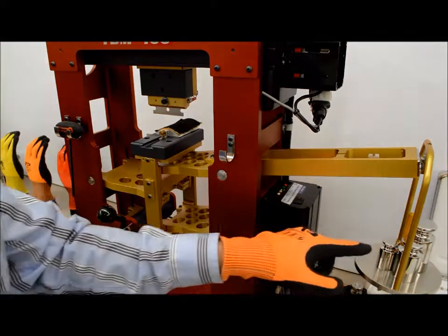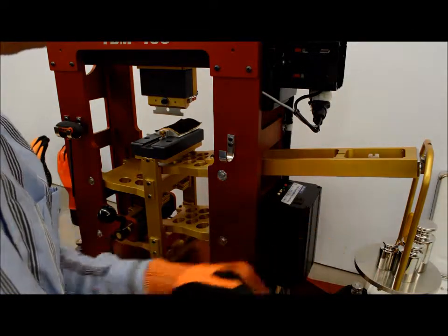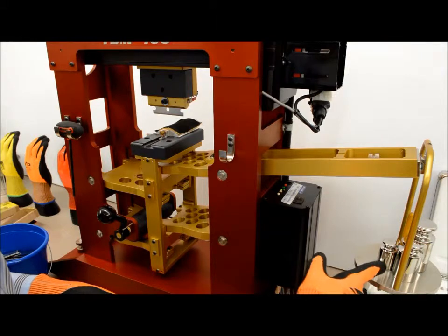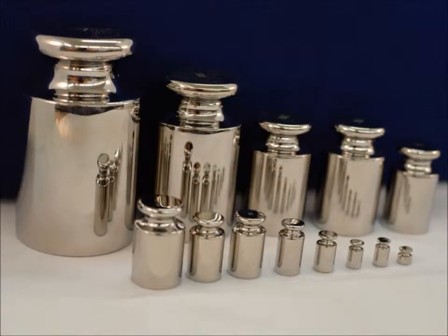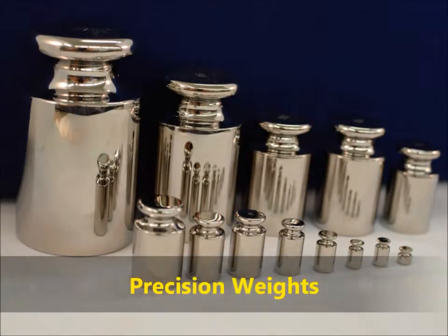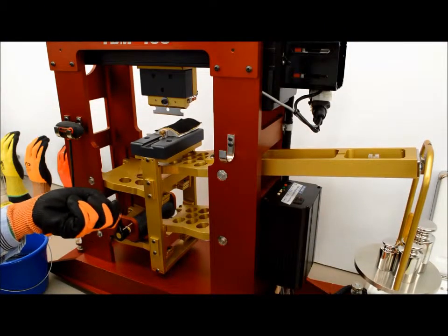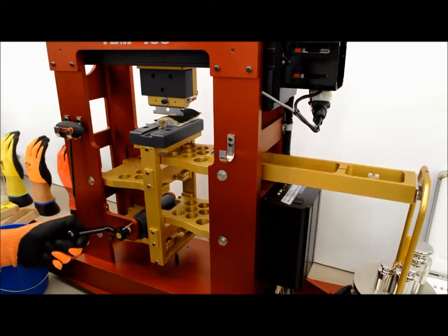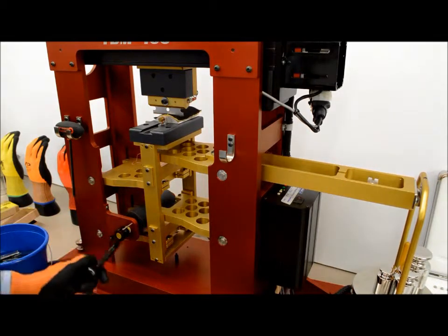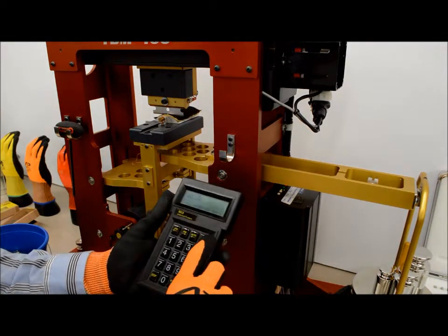Now, we check the weights over here. For this test, we've added 1,800 grams of weight from our precision weights. And now we bring the glove material in contact with the razor blade, and on the TDM100, we start the test.